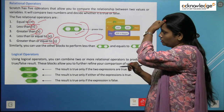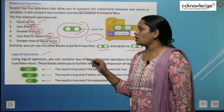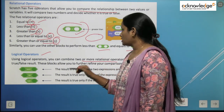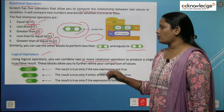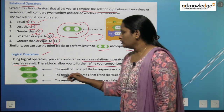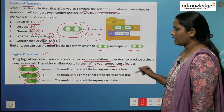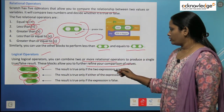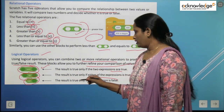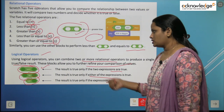Next is logical operators. Using logical operators, you can combine two or more relational operators to produce a single true or false result. These blocks allow you to further refine your comparison of values. The result is true only if two expressions are true. For the OR option, the result is true only if either of the expressions is true. The result is true only if the expression is false. These are the blocks of logical operators.